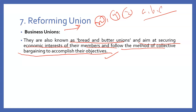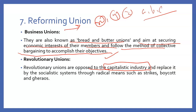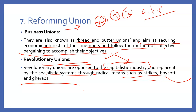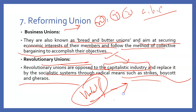The next one is called revolutionary unions. These unions are opposed to the capitalist industry. They want a socialist system, and that is why they always try to do some strike or boycott. The people in these unions are more violent in nature and believe that if work stops in the organization, management will have to accept their demands.